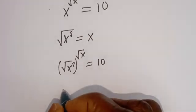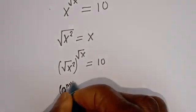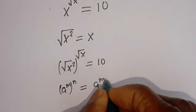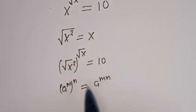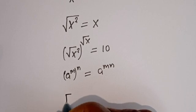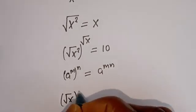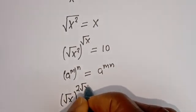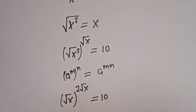Take note that if you have a to the power of m, to the power of n, this is equal to a to the power of m times n. Then this can be written as square root of s, to the power of 2 times square root of s, is equal to 10.